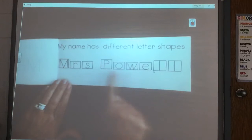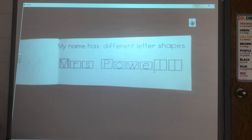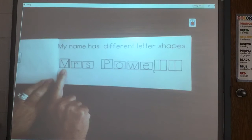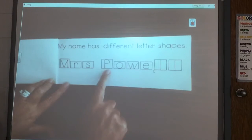So each person's name is going to look different. When I look at my name, the first letter in Mrs. is tall because it is an uppercase letter. The R and the S are short. The uppercase P for my last name, Powell, is tall because names start with uppercase letters. The O is short. The W is short. The E is short. Then I have two L's at the end of my name and they are tall letters.